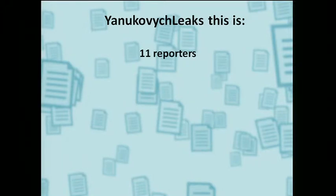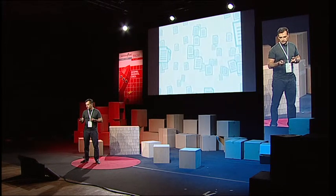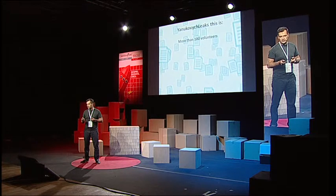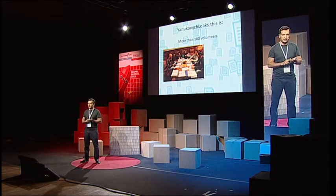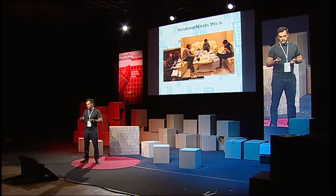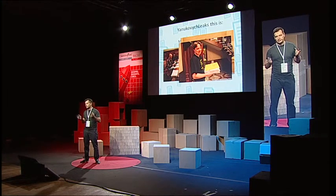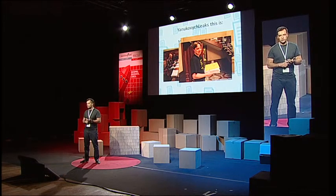Yanukovych Leaks involved 11 reporters and investigators — here's a photo of our team — plus more than 100 volunteers who, in the first days of finding the documents, helped us dry, search, and scan them. In the following days, we had a couple dozen additional volunteers: professional lawyers, auditors, bookkeepers, and financial analysts who helped us conduct journalist investigations and discover the main secrets in these documents. Altogether, this resulted in 29 journalist investigations, which you can find on our web platform yanukovich.org, translated into English.